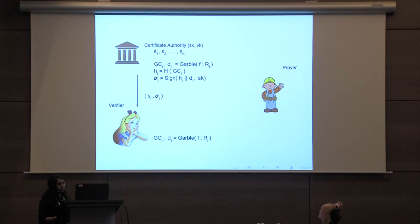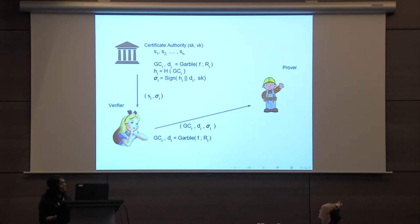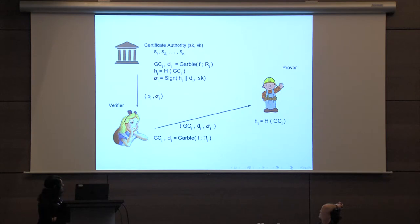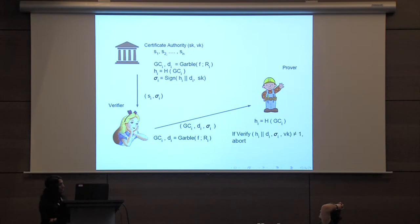In the online phase, the verifier can reconstruct the garbled circuit using the randomness generated from the seed, and she sends the garbled circuit along with the CA signature to the prover. The prover computes the hash of the garbled circuit and proceeds to evaluate it only if the CA signature verifies.